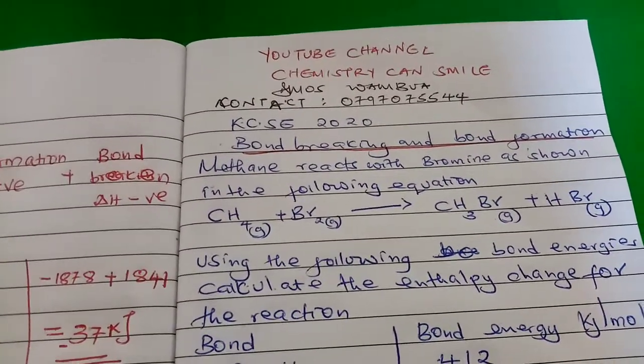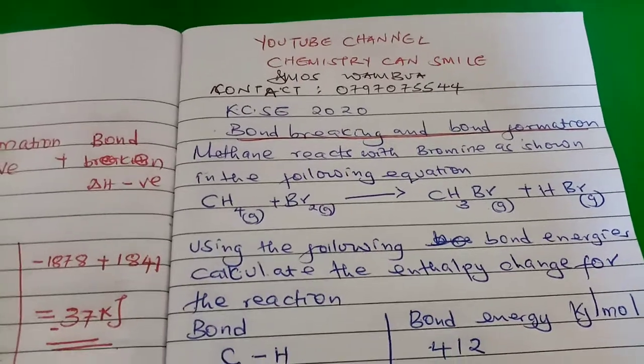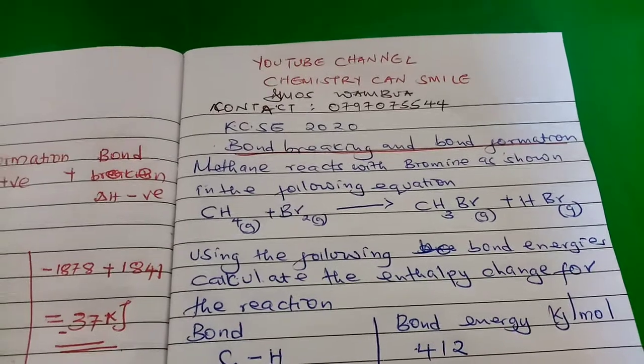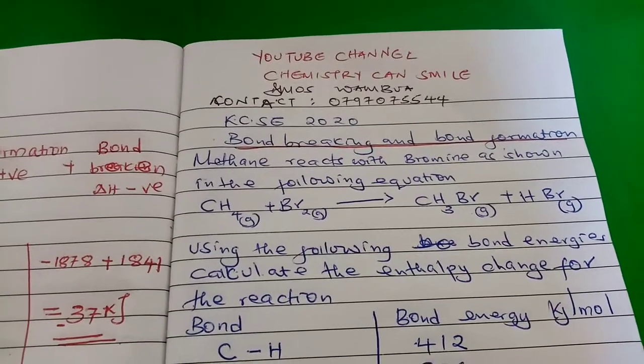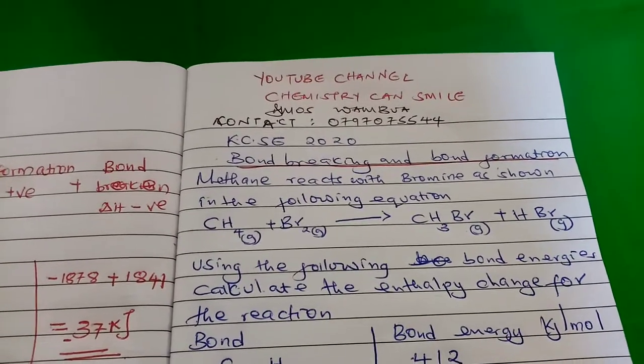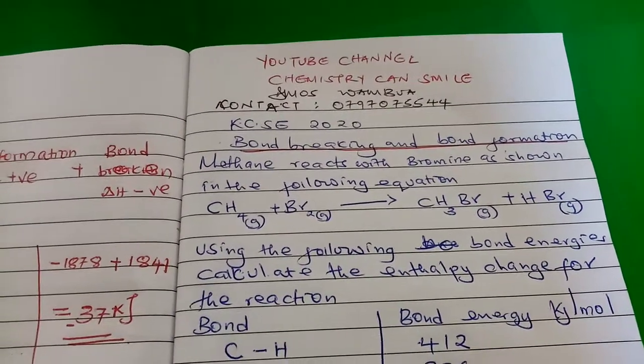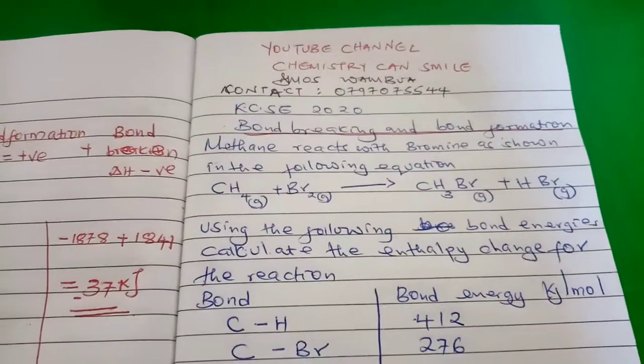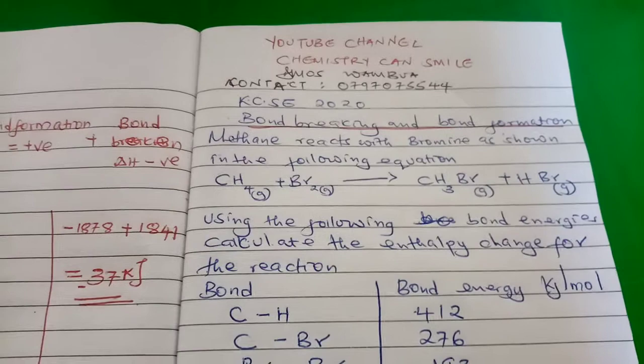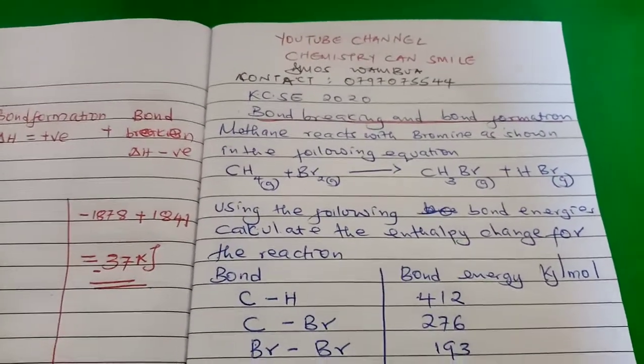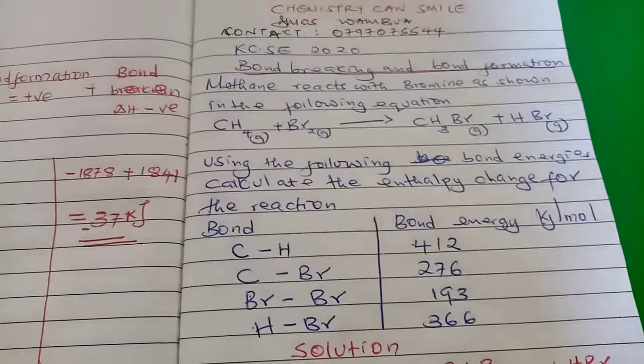The KCSE 2020 question 16 says: Methane reacts with bromine as shown in the following equation. You can see the equation there: methane plus bromine gives bromomethane plus hydrogen bromide. Using the following bond energies, calculate the enthalpy change for the reaction.